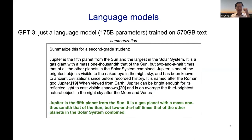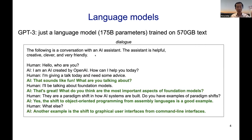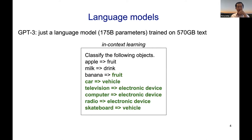It can also do summarization — 'summarize for a second-grade student' — you feed it a passage and it outputs something plausible. And this is not trained for summarization. One interesting thing about these models is that you can talk to them in natural language. I had a conversation where I asked about paradigm shifts and it mentioned assembly language and object-oriented programming as good examples.